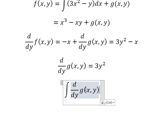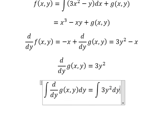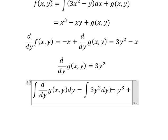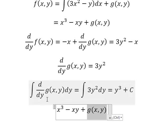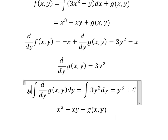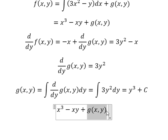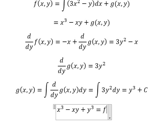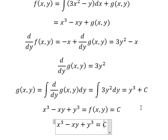Next, we need to integrate both sides. We get y³ plus C. Now we go back and substitute — g(y) equals this expression. We know that F(x,y) equals C. Now we can simplify and write the final answer like this. This is the end, thank you for watching.